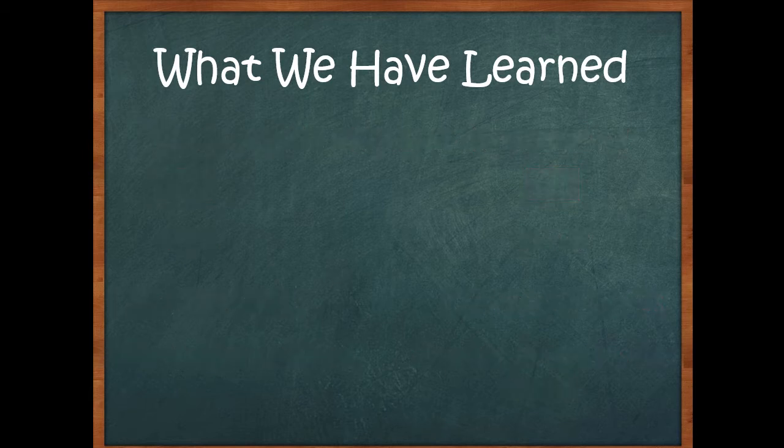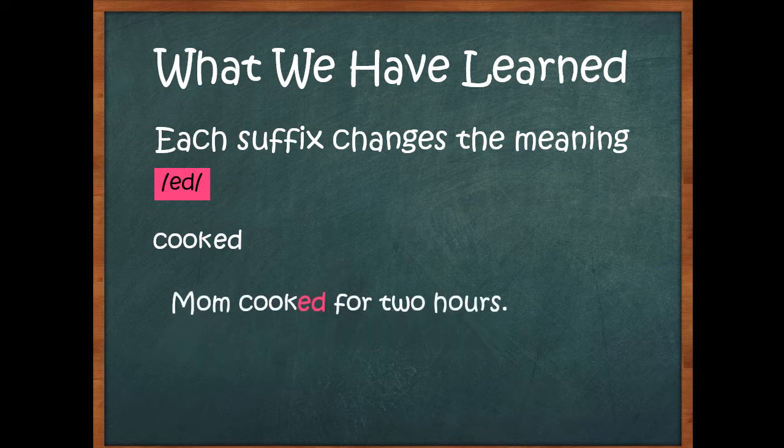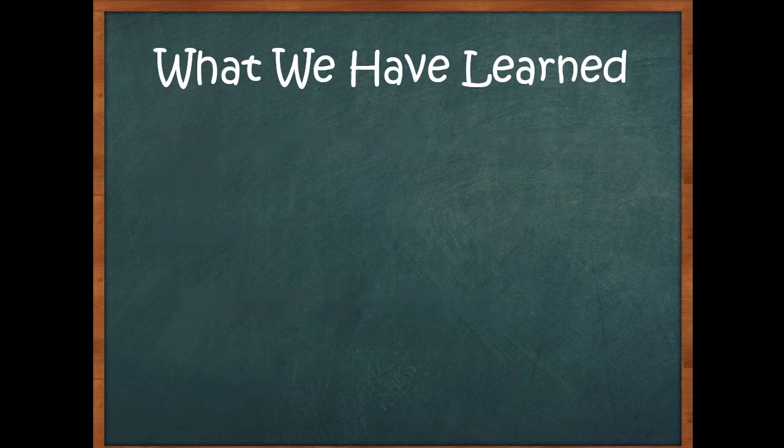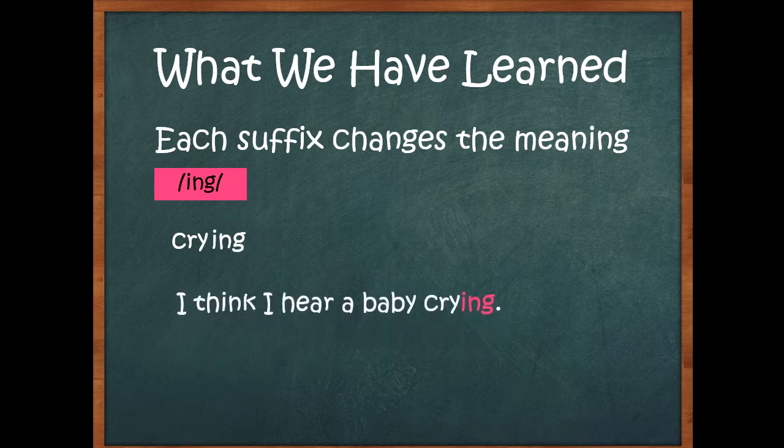And we had the ED ending. We can take a word like cook and make cooked, like mom cooked for two hours. Now ED can do other things, but that's the only thing we're worried about right now. We also added the ING ending. So we can take a word like cry and make crying. I think I hear the baby crying. And for now, let's just say that tells us what someone is doing now. There are lots of other uses of ING, so many, but that's all we need to worry about right now.